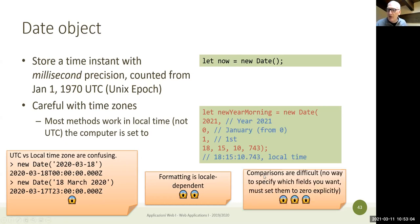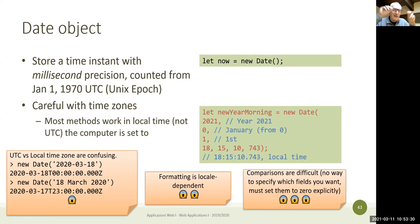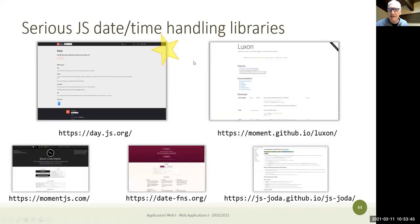Comparisons are also difficult — what's stored is a combination of date and time, so when comparing two dates you must zero out the hour, minutes, and seconds fields. It's a very low-level library with many problems. Our suggestion is not to use the built-in Date library; there are several well-maintained alternatives.